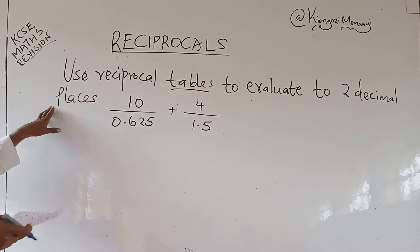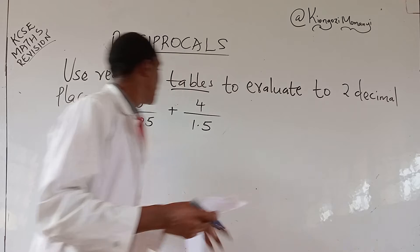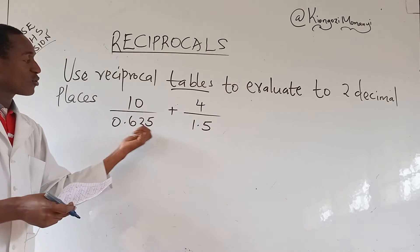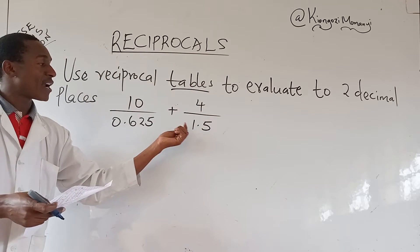So use reciprocal tables to evaluate, correct to two decimal places, 10 over 0.625 plus 4 over 1.5.